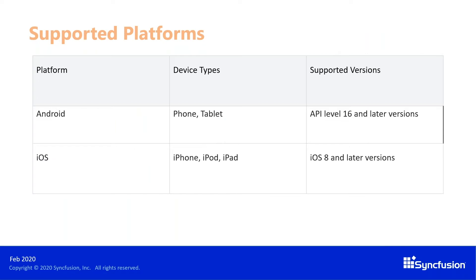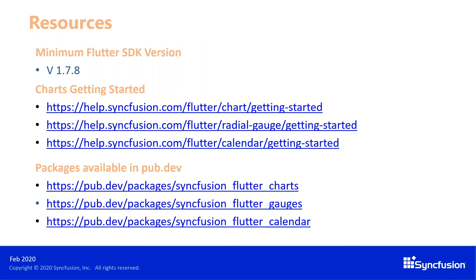I'd like to remind you all about the platforms for our Syncfusion Flutter widgets. As of now, we support Android and iOS. On Android, we support device types like phones and tablets. The supported version is from API level 16 and higher, and from iOS 8 onwards. Currently, we do not support Flutter for web as it is in preview from Google itself. Whenever it is fully released, we will have that opportunity as well. The minimum Flutter SDK version required to render Syncfusion widgets is version 1.7.8.